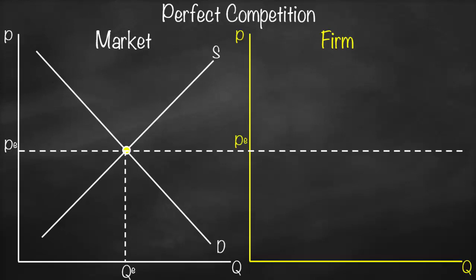This will be my firm's price because firms in perfect competition are price takers — they don't influence the price. Therefore, this price, represented as a horizontal line, is also called our demand curve, which is the same as the price and the same as marginal revenue. In perfect competition, our demand curve is horizontal, not downward-sloped, because firms are price takers.